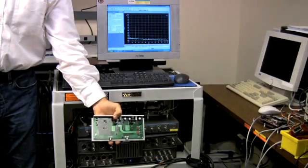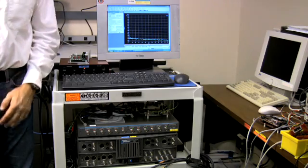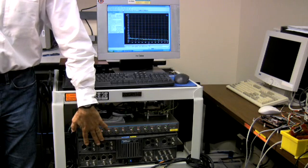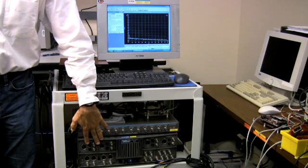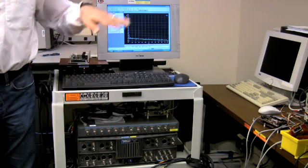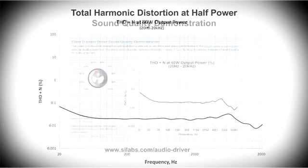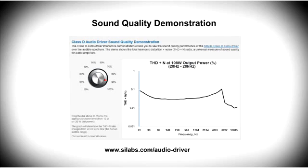Class D audio amplifiers like this one have very low output distortion and consequently require specialized equipment to measure their performance. In our case, we used an audio precision analyzer. This analyzer measures harmonic distortion plus noise by sweeping across the amplifier's frequency range at various output power levels and displaying the results on this monitor. Here we see a plot of THD plus N showing a value of 0.02% at 1 kilohertz and at half power. To see more Class D THD plus N performance data, please visit our interactive Class D audio driver evaluation web page shown at the bottom of the screen.